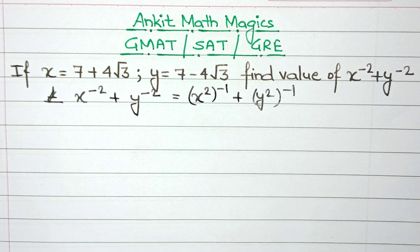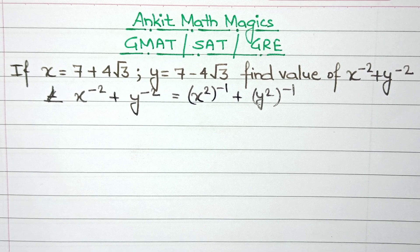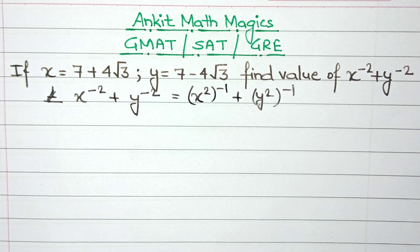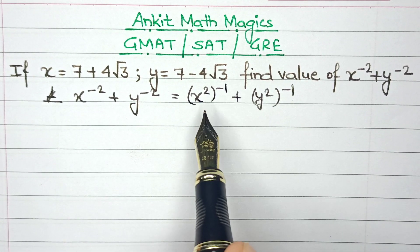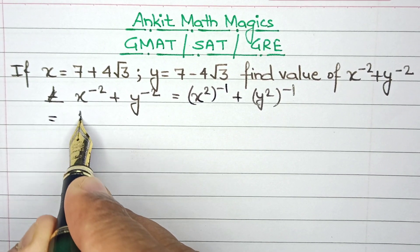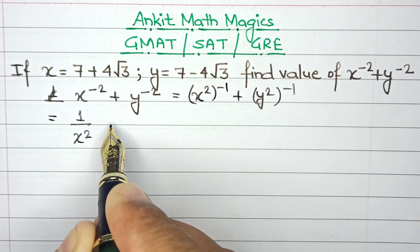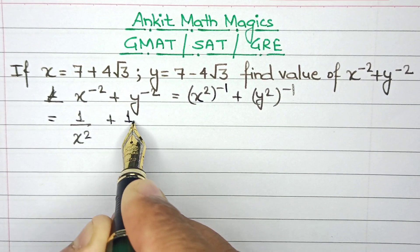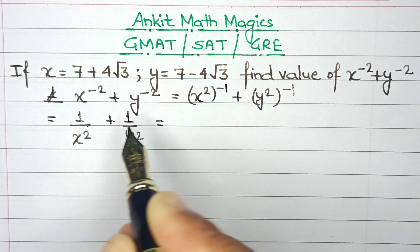As you can see, we now have a situation where the inverse power can help us convert this into its fraction form. So this can be written as 1 divided by x square plus 1 divided by y square.